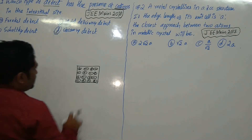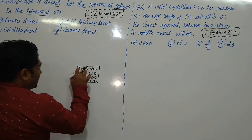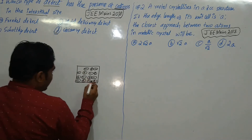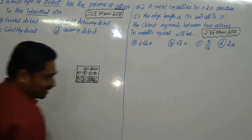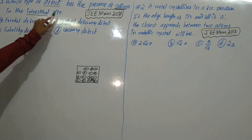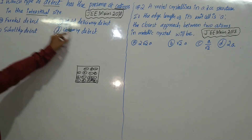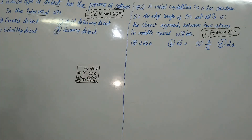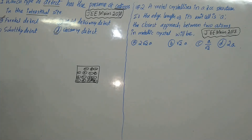In Frenkel defect, what happens is that the small-sized cation leaves its own lattice site and occupies an interstitial site. So in Frenkel defect, cations are present at the interstitial site. This is our answer — Frenkel defect.